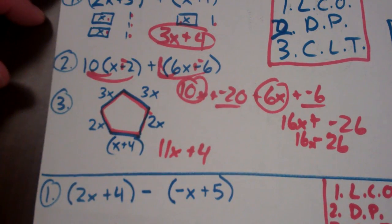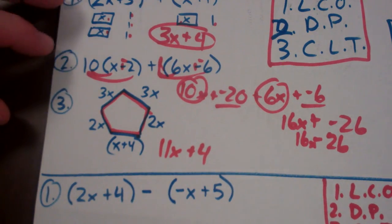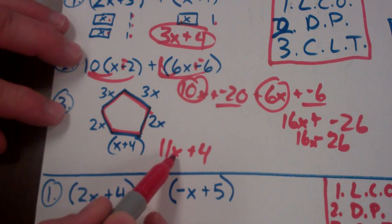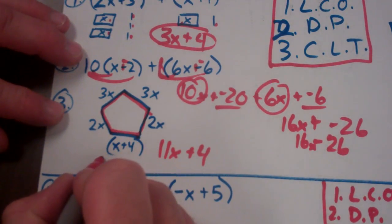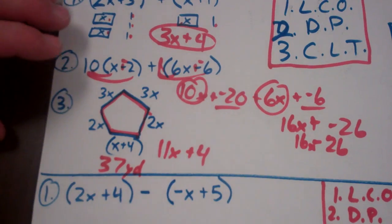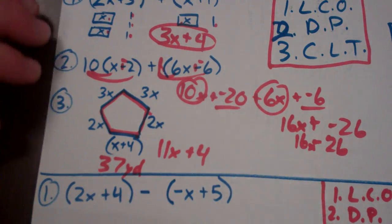And then it says find the perimeter if the value of x is 3. So if the value of x is 3, 3 times 11 is 33. 3 plus 4 is 37 yards. 37 yards around as a perimeter.